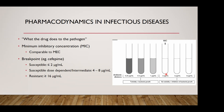We relate the MIC to something called a breakpoint. Breakpoints are specific MIC values that define susceptible, susceptible dose-dependent, intermediate, or resistant categories — and they are organism-specific. For cefepime against Enterobacteriales (such as E. coli), the susceptibility breakpoint is an MIC ≤ 2. So if a bacterial isolate has an MIC of 2, we would call that E. coli susceptible to cefepime.